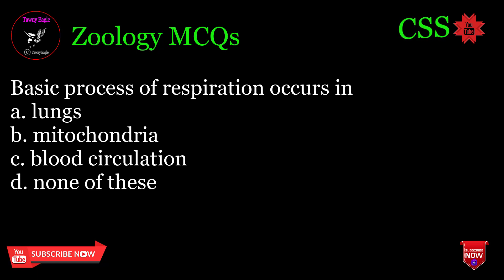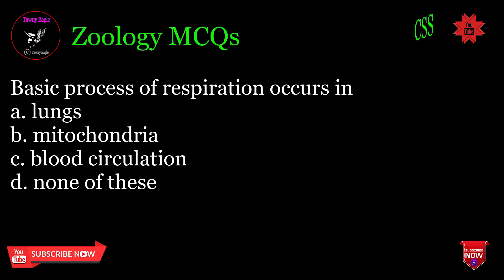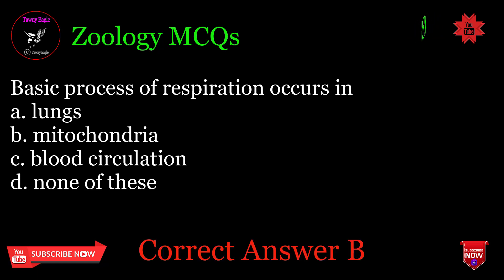Basic process of respiration occurs in: A. Lungs, B. Mitochondria, C. Blood circulation, D. None of these. Correct answer: B.